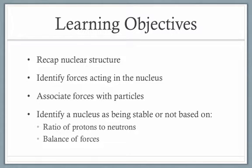Once we've identified what the forces are, we need to associate these forces with individual particles, which then, finally, will allow us to identify a nucleus as being stable or not based on the ratio of protons and neutrons, those are our particles, as well as a balance of the forces involved.